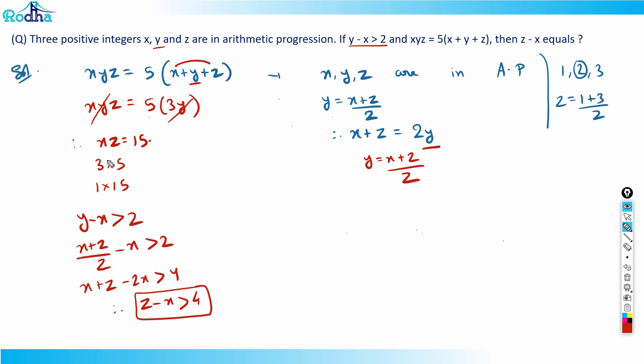So now I need to see that z minus x is more than 4, and x into z is 3 into 5 or 1 into 15. I can see that if the difference between z and x is more than 4, the first case is wrong. In that case, only the second case is possible. Z minus x is more than 4, that means z will be equal to 15 because z should be more than x.